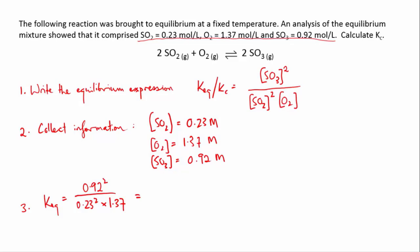If you plug that into your calculator you should get 11.7, or if we look at our sig figs, two of our concentration values are only to two significant figures, so we should really round that down to 12.